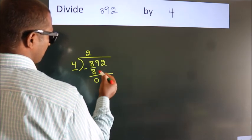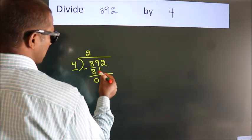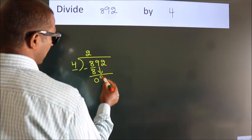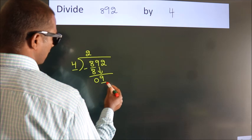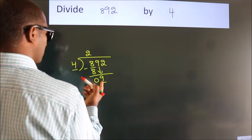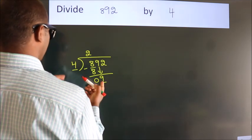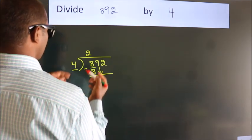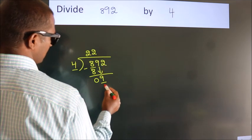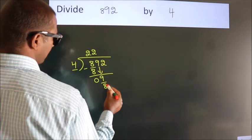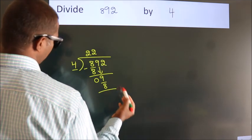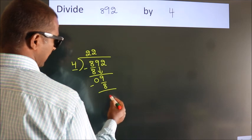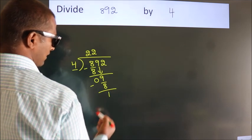After this, bring down the beside number. So, 9 comes down — so we have 9. A number close to 9 in the 4 table is 4 twos, which is 8. Now we subtract. We get 1.